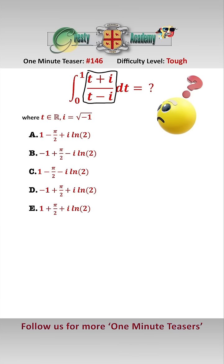First thing we need to do is get rid of the i off the bottom by multiplying by the conjugate t plus i over t plus i. That gives us t squared plus 2it minus 1 over t squared plus 1, which we can split into reals and imaginaries.